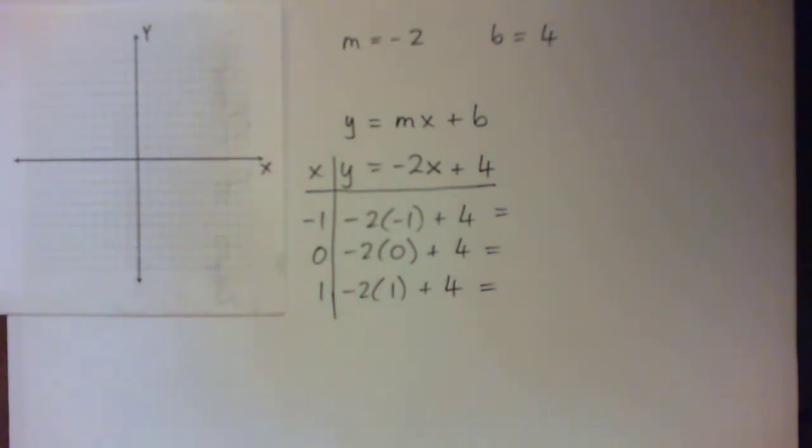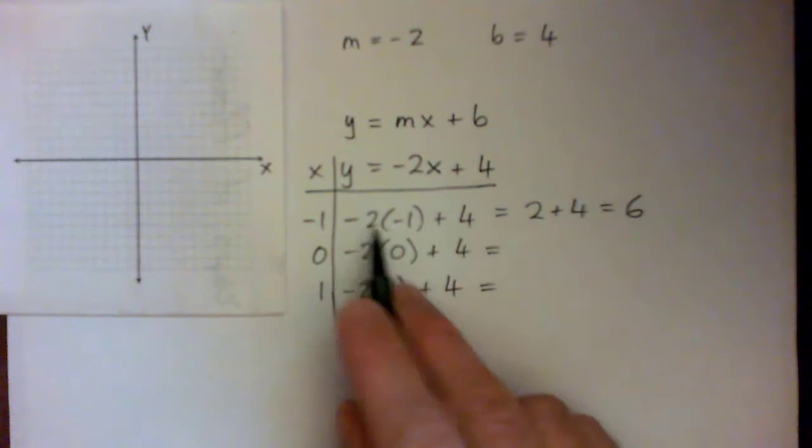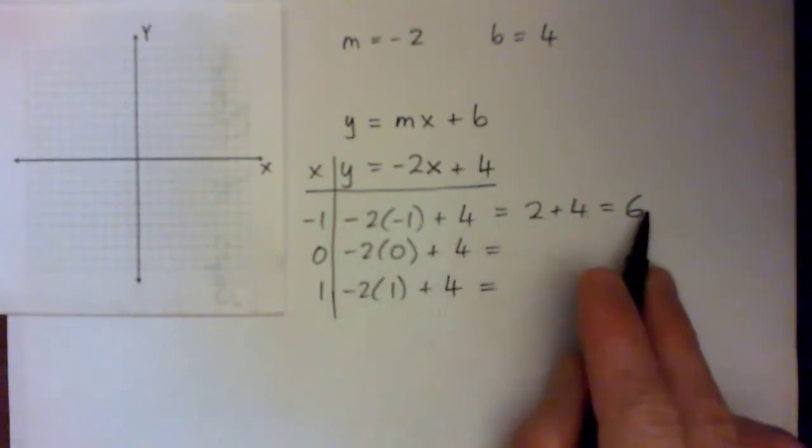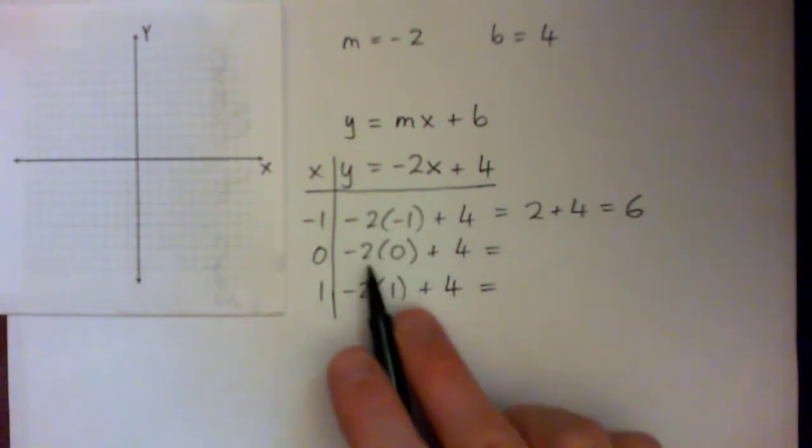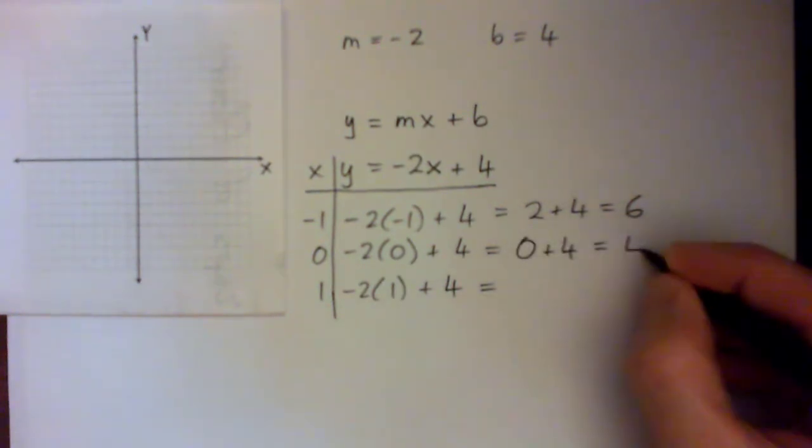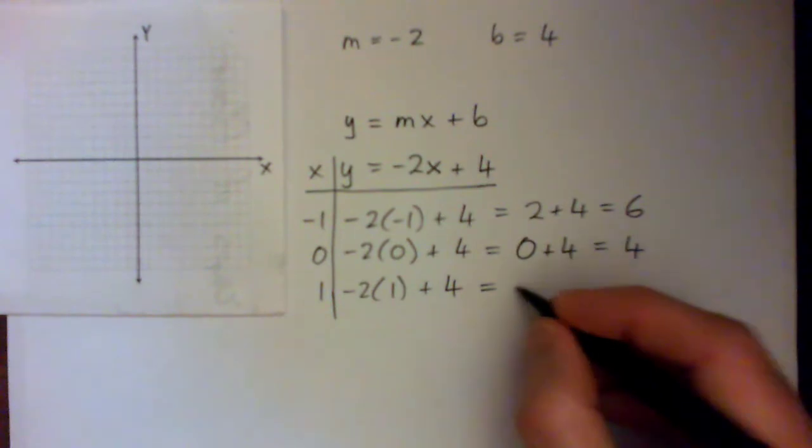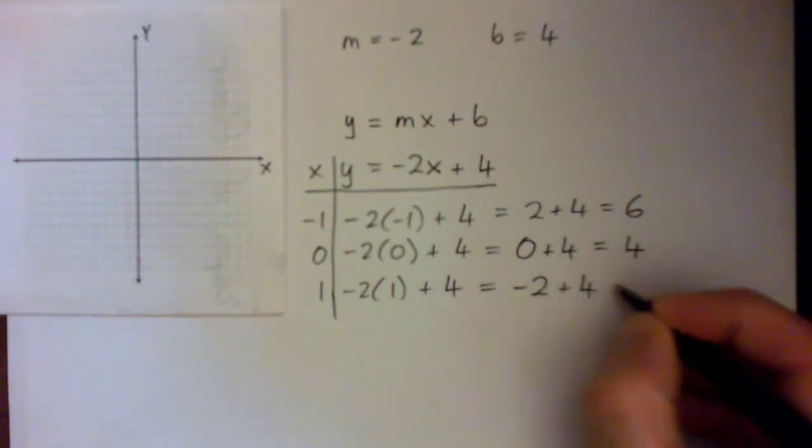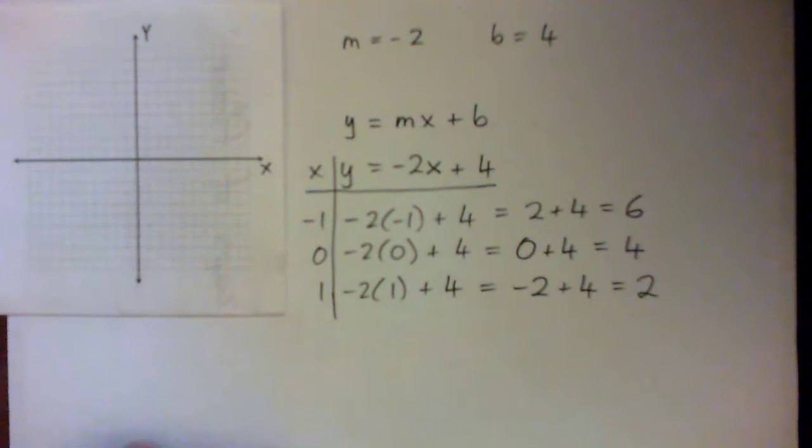Alright. Okay. So I'll go over it now. So we got negative 2 times negative 1 is positive 2. Positive 2 plus 4 is just 6. Negative 2 times 0 is 0. 0 plus 4 is 4. Negative 2 times 1 is negative 2.